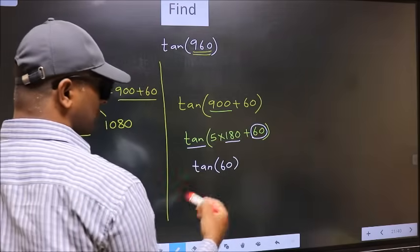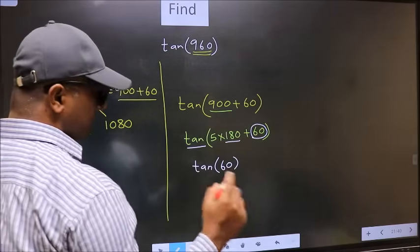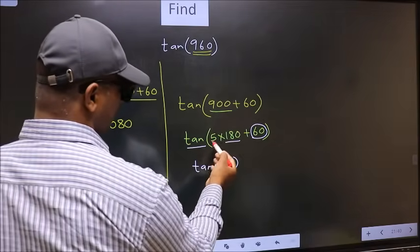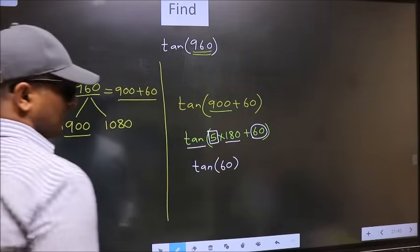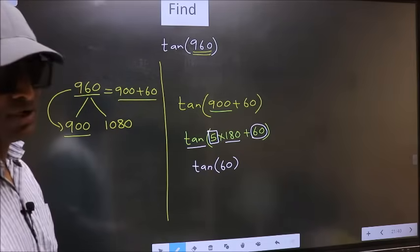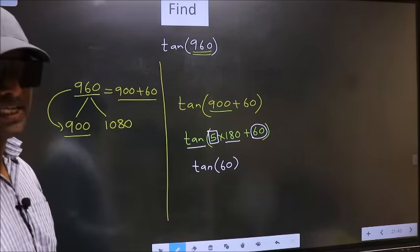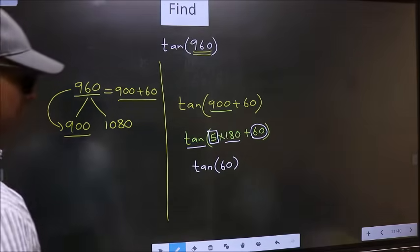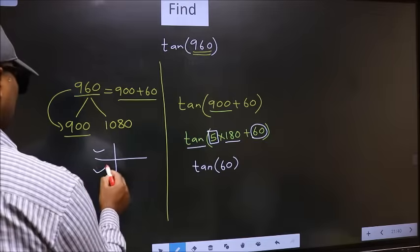Now the question is, will we get here plus or minus? To answer that, we should look at the number before 180. That is 5. And 5 is odd. And all the odd multiples of 180, they lie either in the second or in the third quadrant.